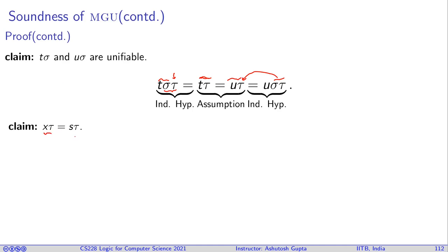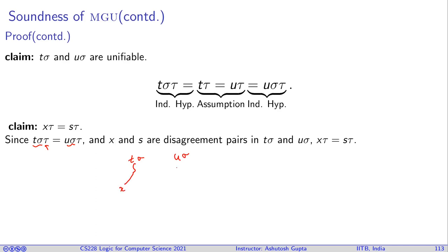Furthermore, I can prove one more thing: that x tau and s tau are equal. Since the intermediate terms are unifiable by tau, and since x and s are disagreement pairs in t sigma and u sigma, let's suppose there is a path where somewhere x occurs and somewhere s occurs, and when you apply tau on them they become equal. That means applying tau on them should also result in the same thing, otherwise how can they become equal? So therefore x tau and s tau should be the same.